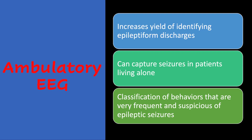Briefly touching on ambulatory EEGs: we bring patients into the lab, connect them to the EEG, and they go home with the monitor. We record for 24 hours — in rare instances I've recorded for 48 or 72 hours as well. Ambulatory EEG increases the yield of identifying epileptiform discharges. These can capture seizures in patients living alone who have not been witnessed having seizures and are not aware of their unawareness. Ambulatory EEG acts like a witness providing additional information. In younger individuals or children with frequent suspicious behaviors, ambulatory EEG can help classify whether those behaviors represent epileptic seizures.